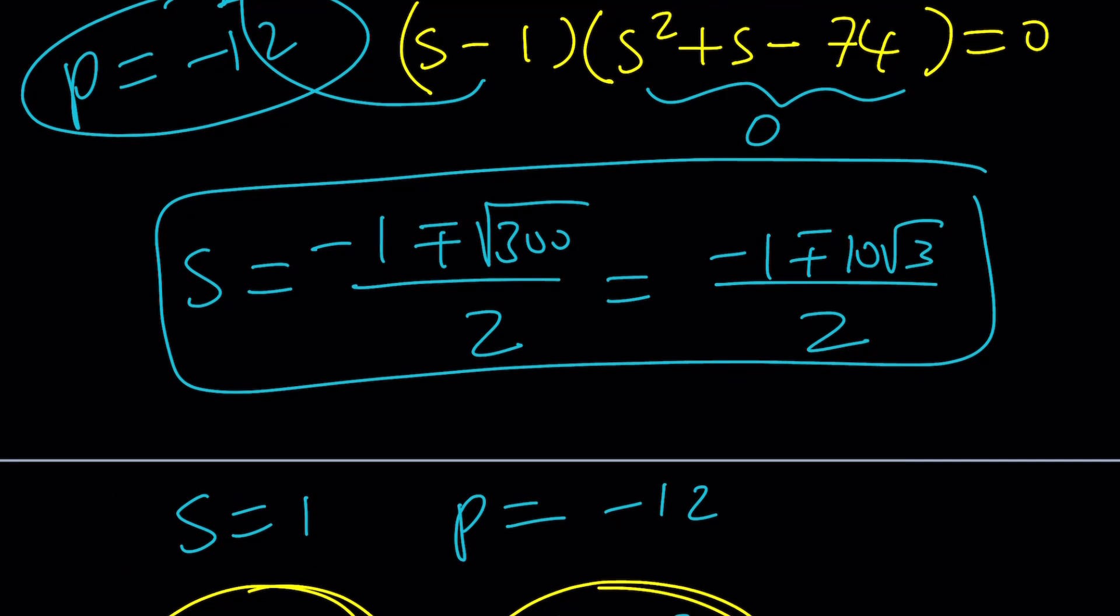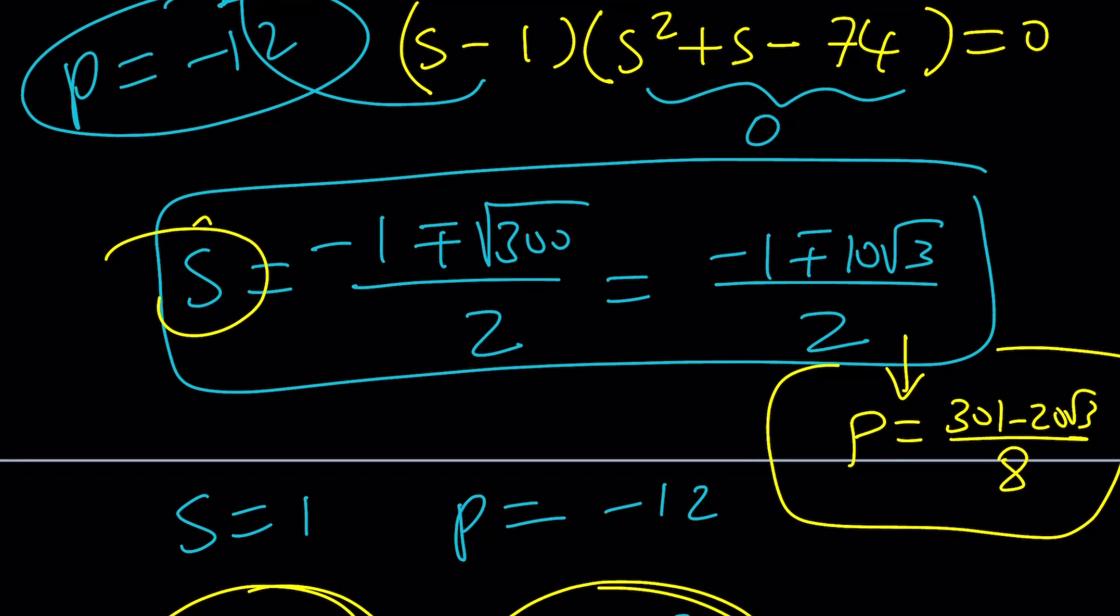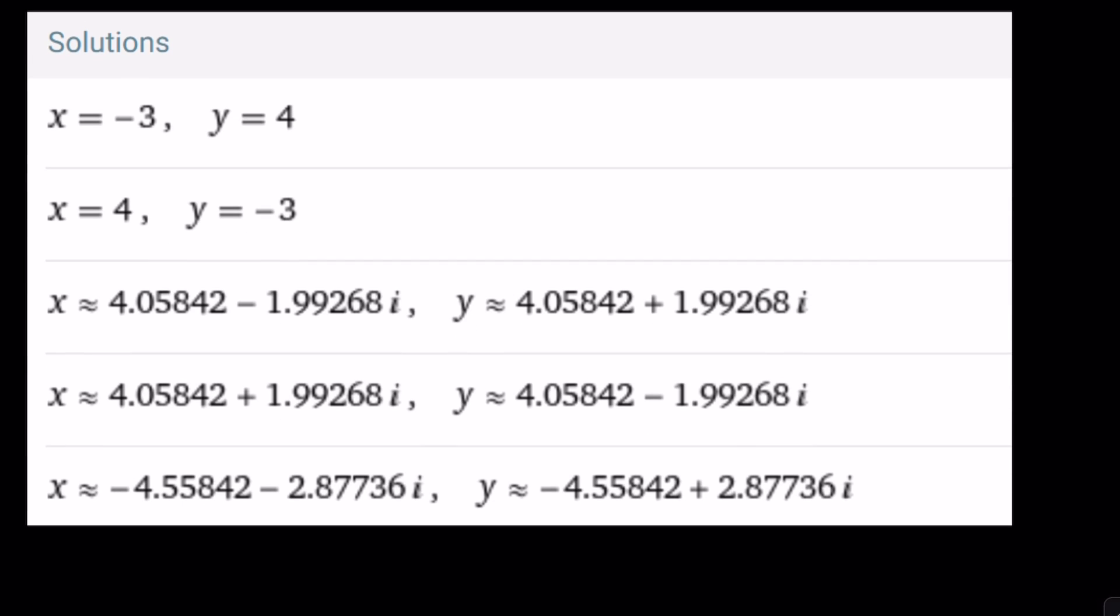What happens with the second one, the other s value? You can find the p-value, but guess what's going to happen? Let me tell you. I think p is going to be something like 301 minus 20 root 3 over 8, if I didn't make any mistakes. Wow. Look at the values. And by using s and p, you can find x and y from here, but guess what? They're going to be complex. We only got these two real pairs. And the others are complex. And it's hexic, so you get a lot of solutions.